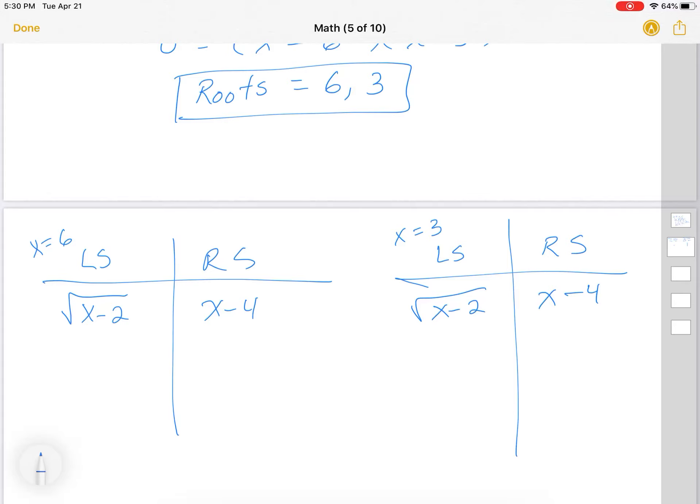Here I'll test x equals 6 and here I'll test x equals 3. Sometimes they both work, sometimes only one works, sometimes none works. So we substitute in. So here I'm going to substitute in anywhere I see x, I'll write a 6. So 6 minus 4. So I'm going to get 6 minus 2 is 4, 6 minus 4 is 2. Square root of 4 is 2. So yay, this one works. So this is an appropriate root.